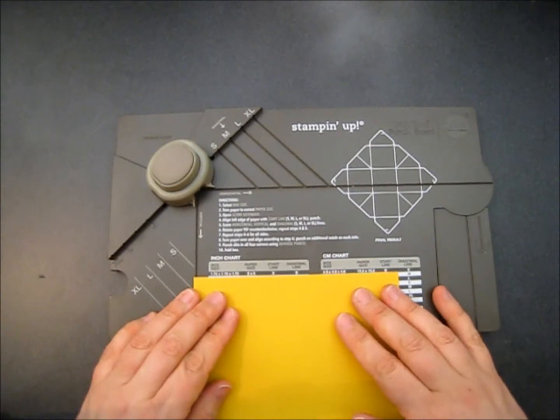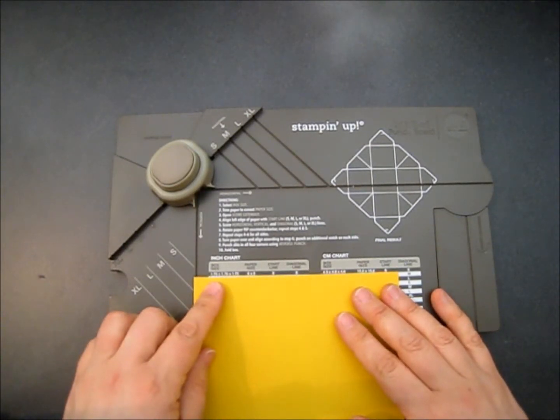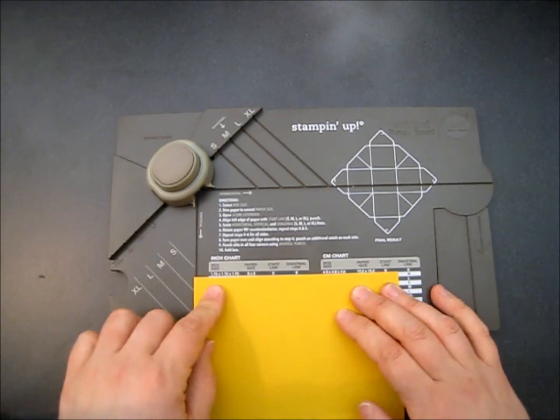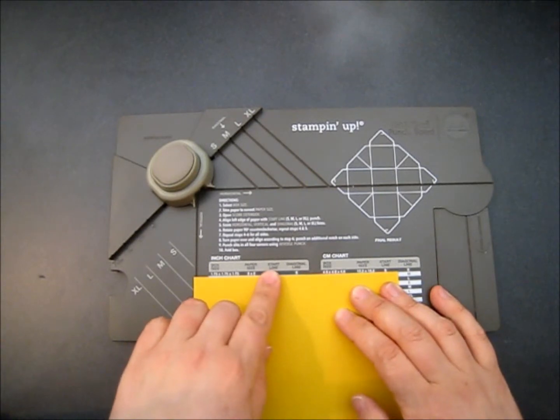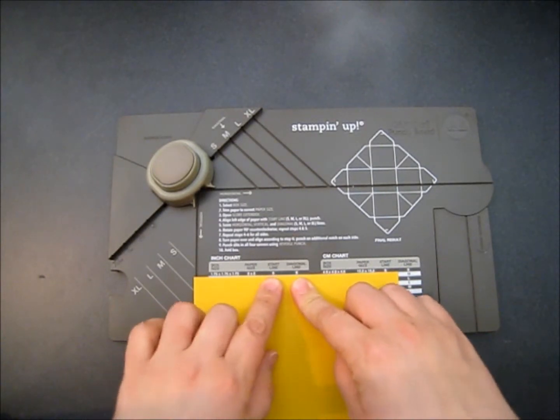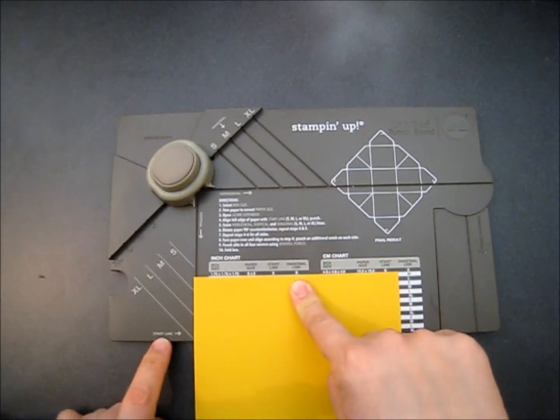So like I said, I've got a piece of cardstock that's cut to 6x6. So we're going to make a box size that's square 1.75 all the way around. So for this 6x6 piece of paper, we're going to want a start line and a diagonal line. Both of these are small, S for small. And what you're going to see here on this box, you're going to see start line here. So that's small.